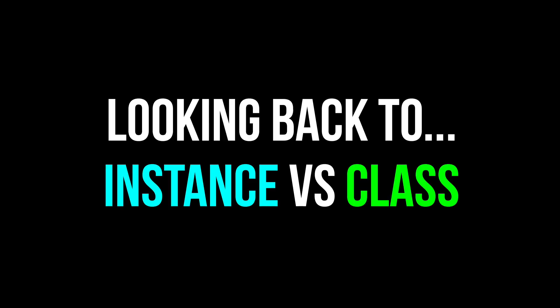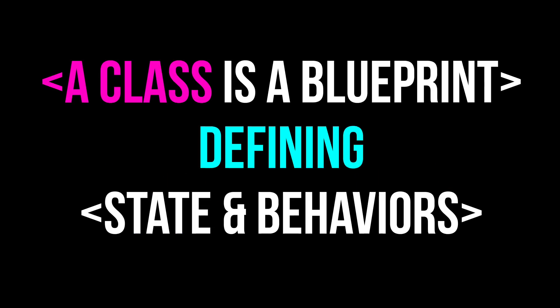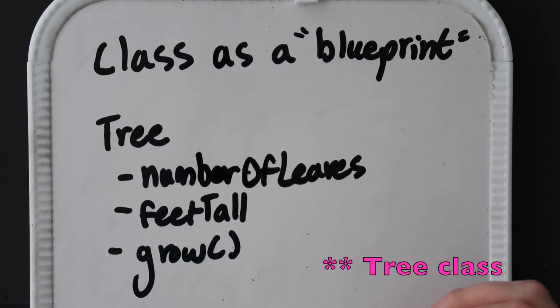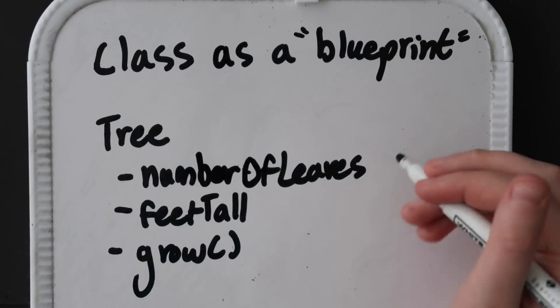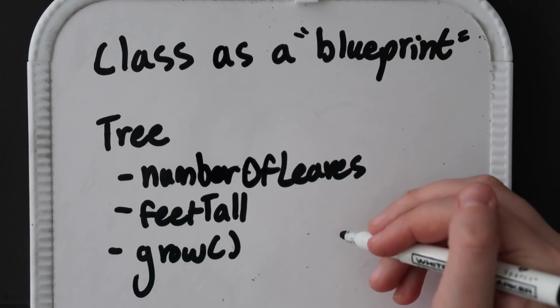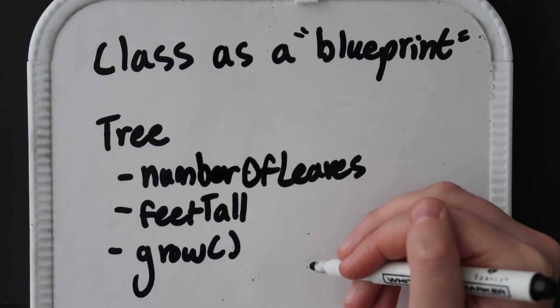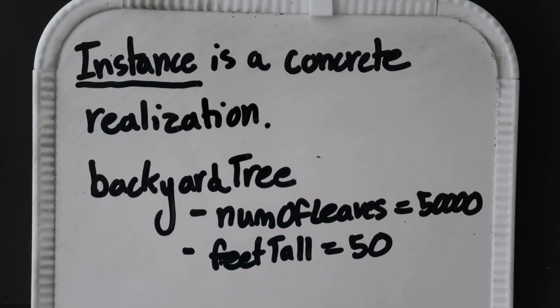Before jumping into the code, let's take a look back at instance versus class. A class is a blueprint — it defines the state and behaviors of something we want to represent in code. It only shows you how to create something; it doesn't create it for you. Here we have an example of a tree with fields and methods. We have two fields: number of leaves and feet tall, and one method called grow.